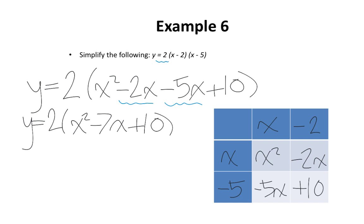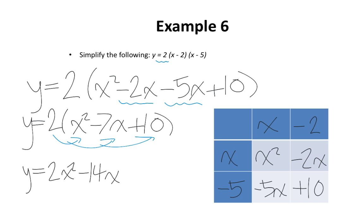At this point, we're going to use the distributive property — distributing the 2 to everything inside the brackets. When you have a number in front of brackets, it means multiplication. So everything gets multiplied by 2: 2 times x squared is 2x squared, 2 multiplied by negative 7x is negative 14x, and 2 multiplied by positive 10 is positive 20. Therefore, our final answer is y equals 2x squared minus 14x plus 20.